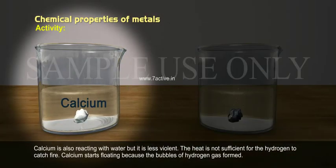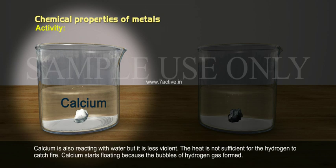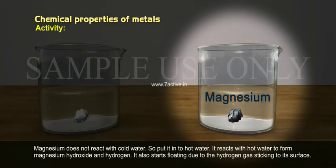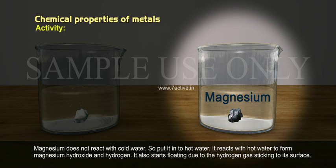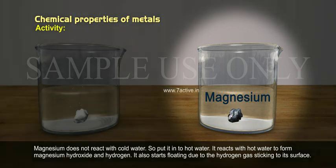Calcium also reacts with water, but it is less violent. The heat is not sufficient for the hydrogen to catch fire. Calcium starts floating because bubbles of hydrogen gas are formed. Magnesium does not react with cold water, so put it into hot water. It reacts with hot water to form magnesium hydroxide and hydrogen, and it also starts floating due to the hydrogen gas sticking to its surface.